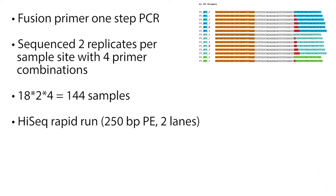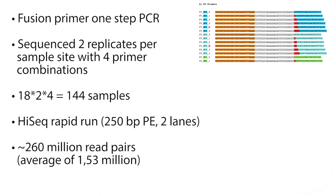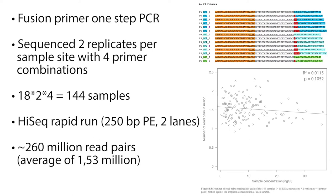Using paired-end sequencing, 250 base pairs were sequenced from forward and reverse directions. We obtained 260 million read pairs in total, with each sample averaging 1.53 million reads. Overall, the sequencing depth was quite equally distributed across the samples.